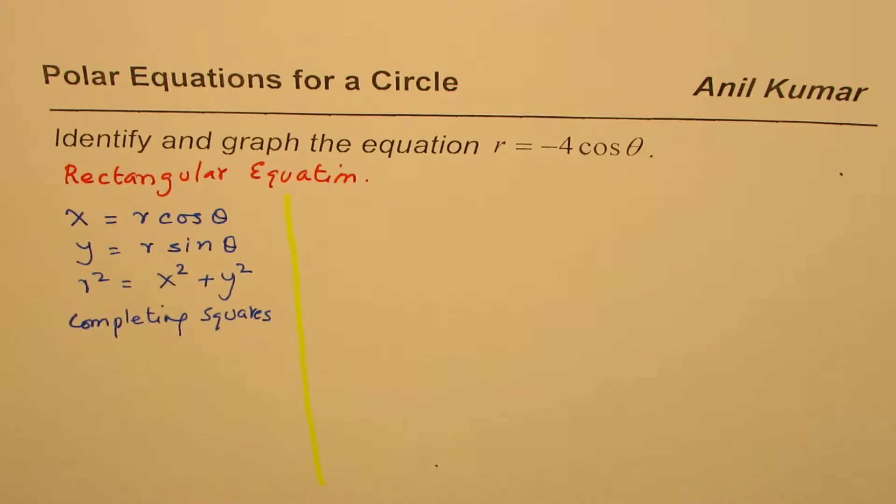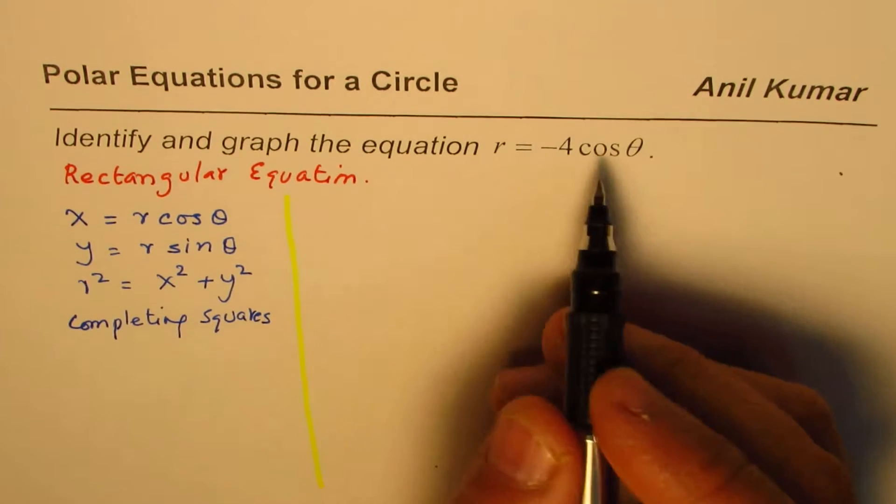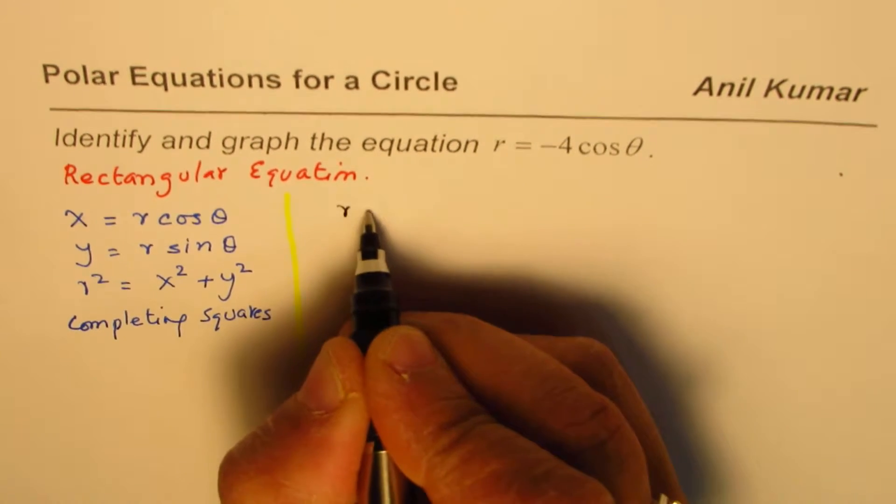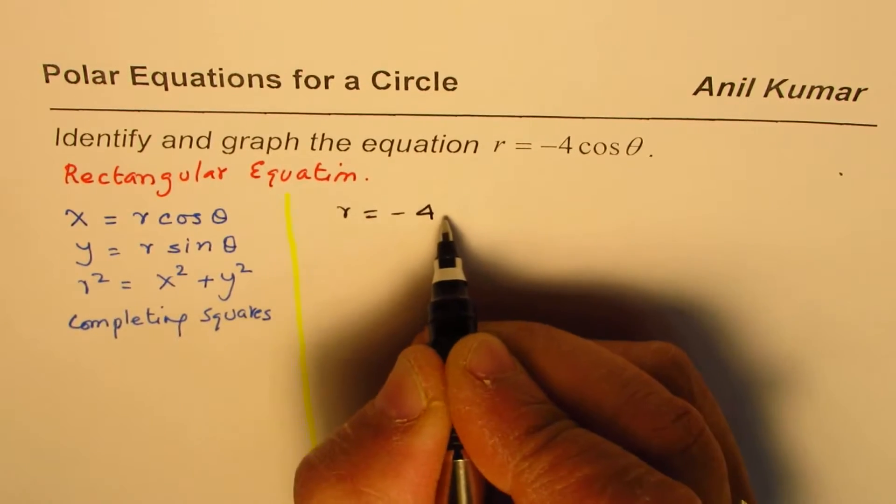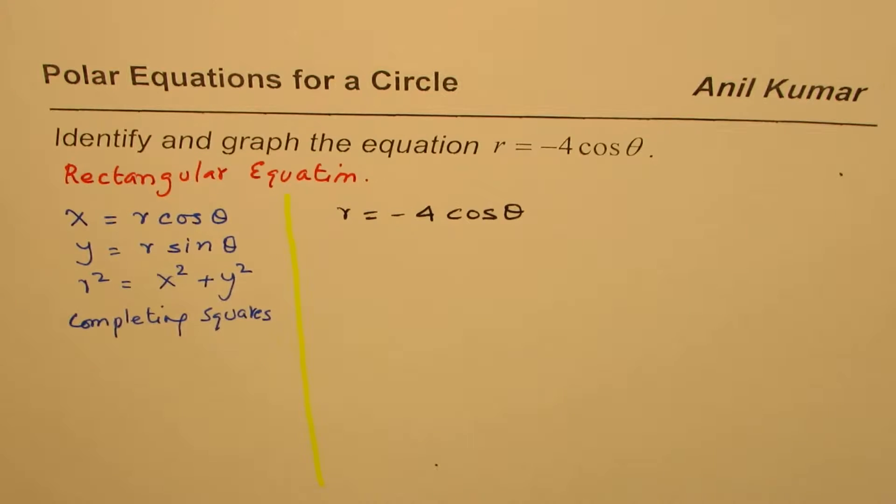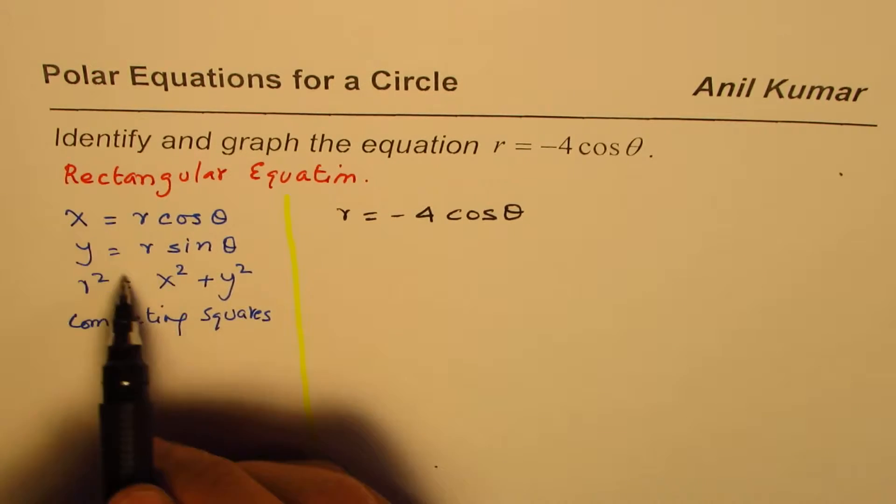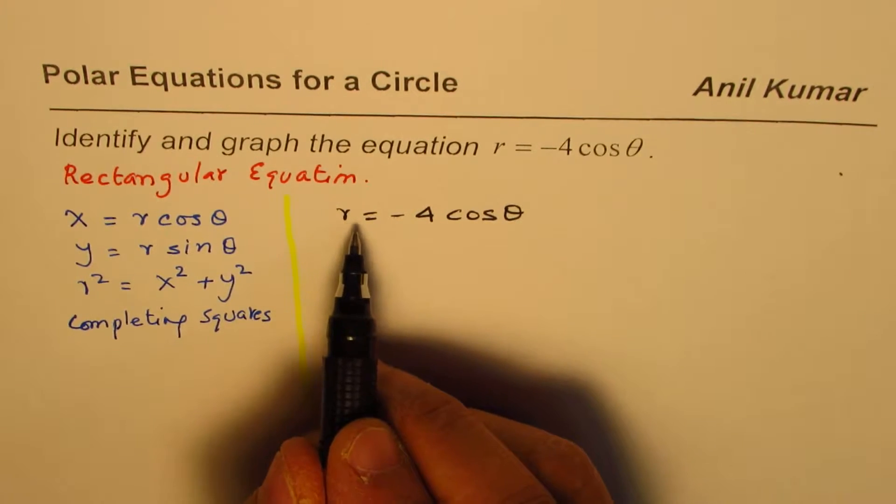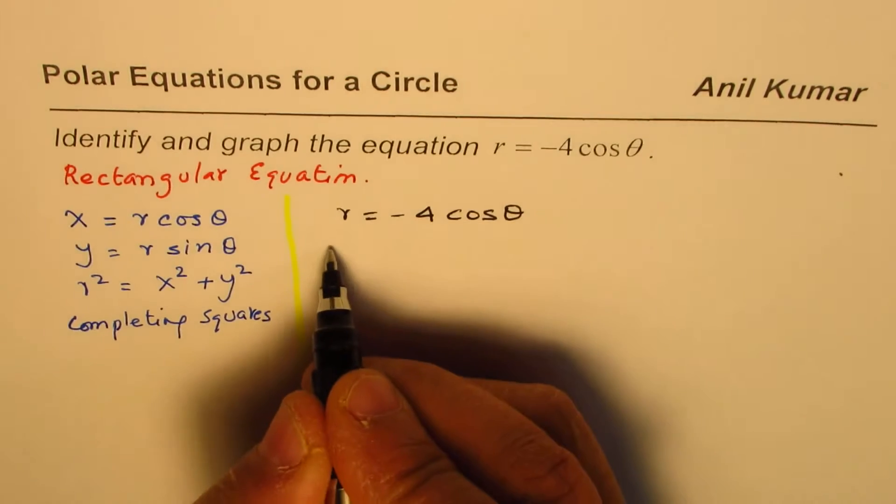So, let's now begin by converting the given equation, which is in polar form, r equals minus 4 cosine theta as a rectangular equation. That means, in terms of x and y, this is in terms of r and theta. So, it's polar form.